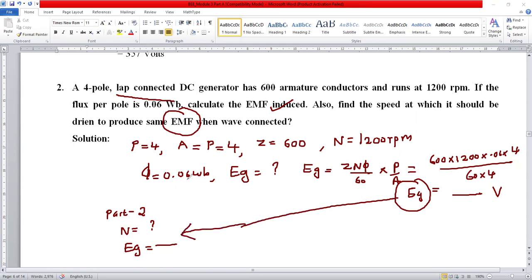Remaining parameters you will keep as is: number of poles, armature conductors, parallel paths, everything stays the same. From the general equation EG equals ZNφ by 60 times P by A, you will compute N equals EG times 60 times A upon Zφ P. This is how to find the answer for this problem.